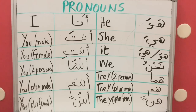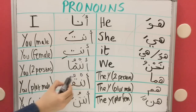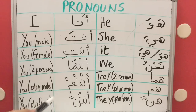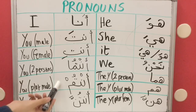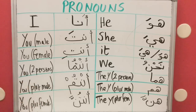And if you are talking to more than two people and they are female, you say 'Antunna'. Antunna. So if they are more than two and all female, it's Antunna. Now if you're talking to more than two people who are male and female mixed, you say 'Antum'. So Antum is used if they are all men, or men and women mixed.